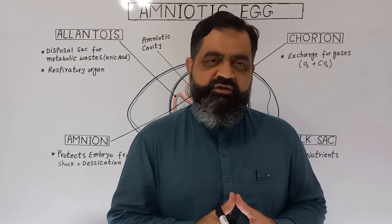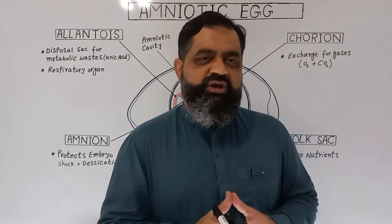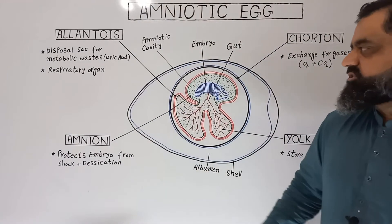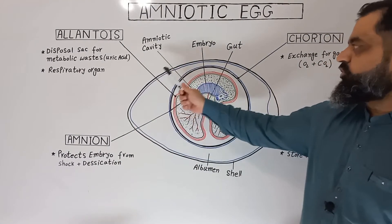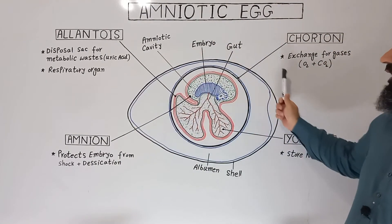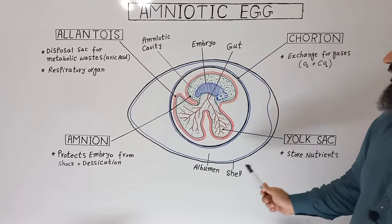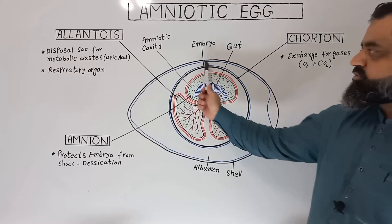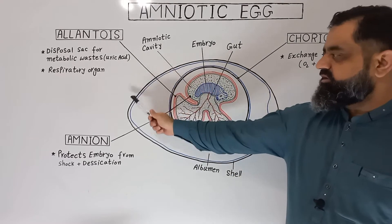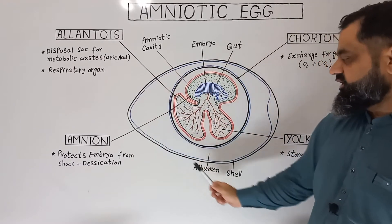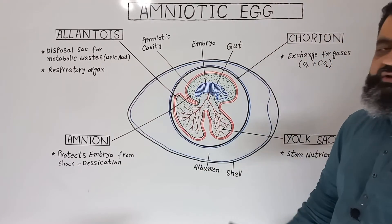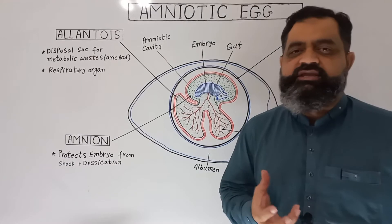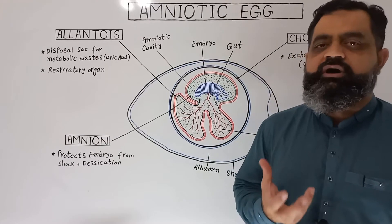Today we are going to discuss the structure of the amniotic egg. Let's look at the diagram. The outermost protective layer of the egg is known as the shell. The shell is usually leathery or it can be hard.